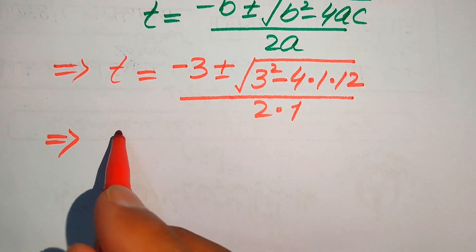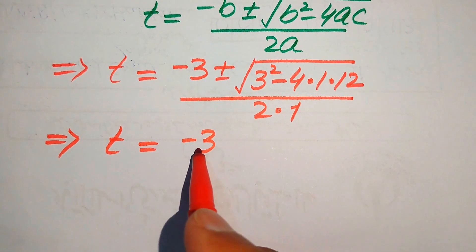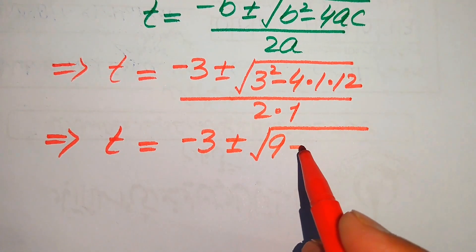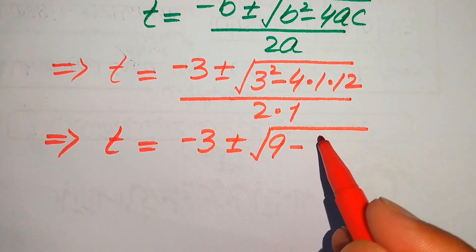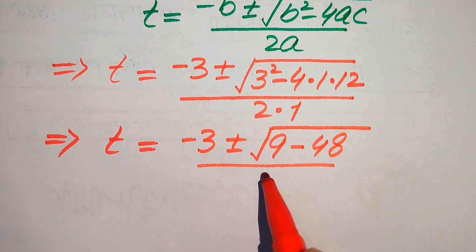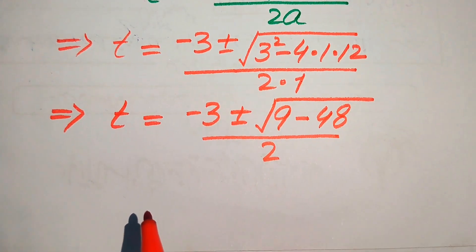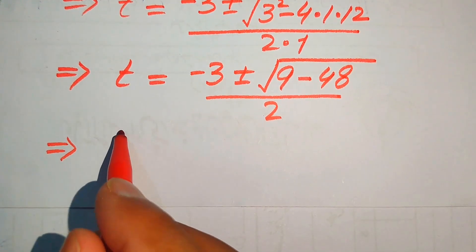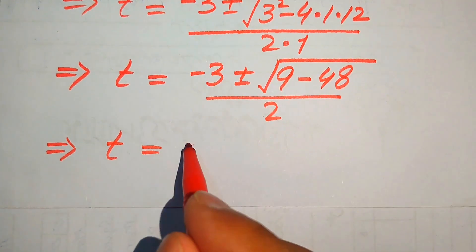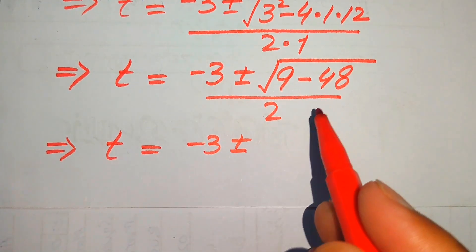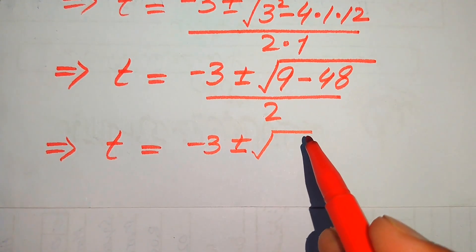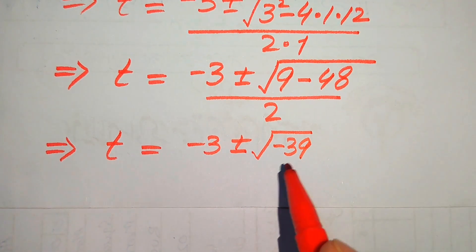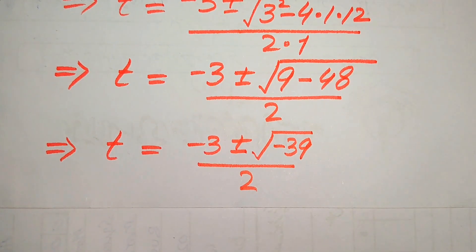In the next step we have t equals minus 3 plus or minus square root of (9 minus 48), divided by 2. Since 9 minus 48 equals minus 39, this becomes t equals minus 3 plus or minus square root of minus 39, divided by 2.